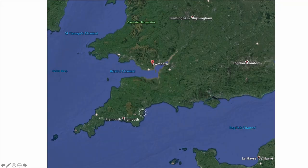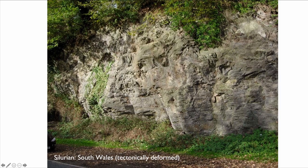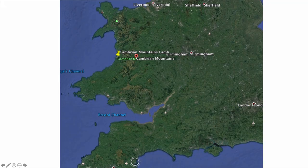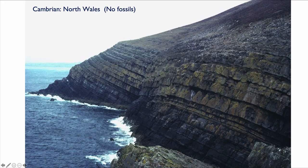Sedgwick and Murchison also worked in the south of Wales, where they defined a unique succession of rocks that were extremely tectonically deformed — very hard to work on and hard to correlate — but which looked much older than anything they knew. In Wales, they defined what is now known as the Silurian. Sedgwick was also working in the north of Wales, in the Cambrian Mountains, where he uncovered a series of rocks that seemed to be older than everything and had no fossils. He termed these rocks after the Cambrian Mountains: the Cambrian.